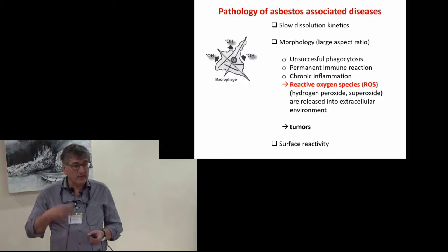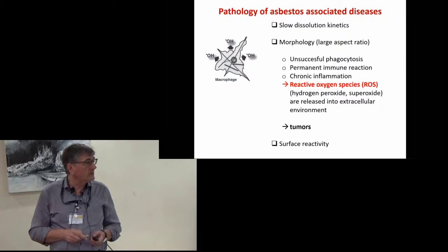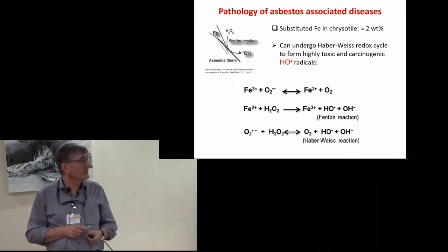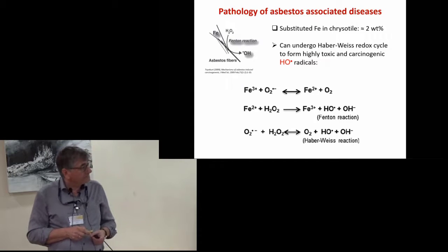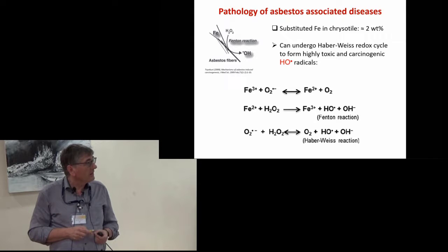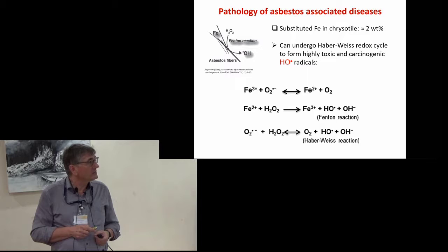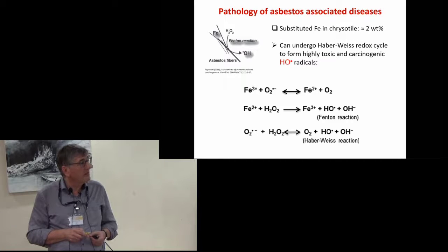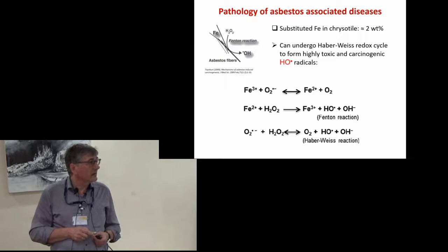These reactive oxygen species can react with active sites on the fiber surface. Iron in chrysotile, approximately two weight percent, is known to catalyze the formation of hydroxyl radicals from hydrogen peroxide at the fiber surface in a Haber-Weiss redox cycle. Superoxide from iron-mediated decomposition of hydrogen peroxide reduces ferric iron to ferrous iron. In the second step with the help of hydrogen peroxide, it oxidizes the iron again, and in this Fenton reaction, the very reactive hydroxyl radicals are formed.